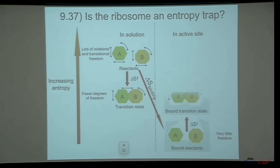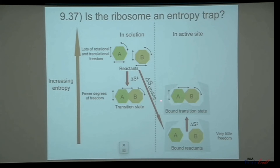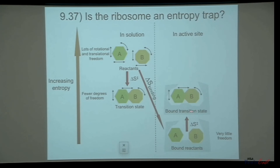Then imagine what happens as the transition state begins to form. A and B move closer to one another as a bond begins to form between them, and this frees up a little space in the active site. So now they've gained some ability to move around. Formation of the transition state actually results in at least a modest increase in entropy.